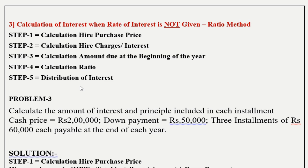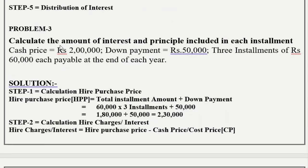Let us see a practical problem. Calculate the amount of interest and principal included in each installment. The cash price is Rs. 2,00,000, and the down payment is Rs. 50,000, and 3 installments of Rs. 60,000 each, payable at the end of the year.